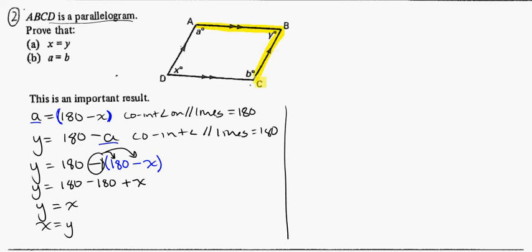So I might do parallel lines like so. And I notice here that I could say Y is equal to 180 minus B. Co-interior angles on parallel lines equal 180. It's going to be very similar to what we've done on the other side.